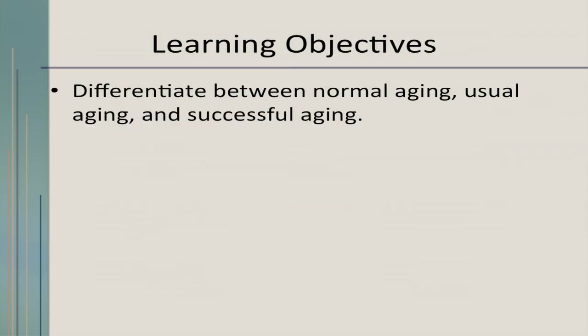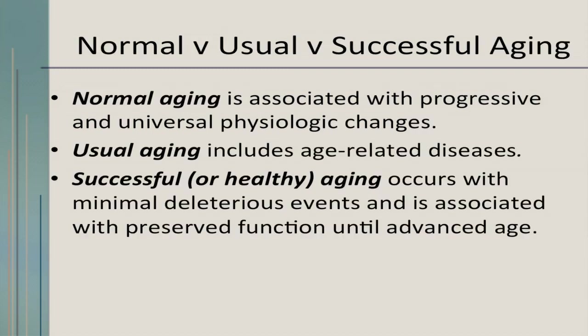Now I want to move on to another learning objective: how do we differentiate between normal aging, usual aging, and successful aging? Normal aging is associated with progressive and universal physiologic changes. Usual aging includes age-related disease. But successful aging occurs when there's minimal health events, and it's associated with preserved function until very advanced age.